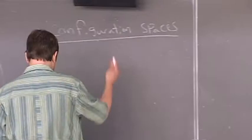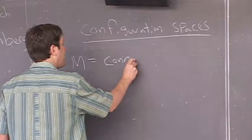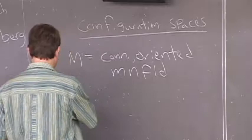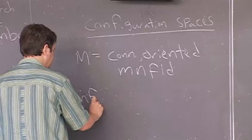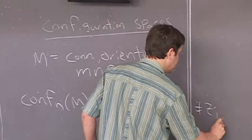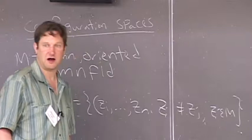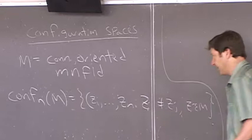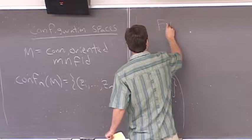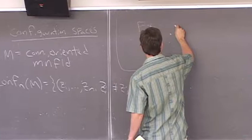We wrote a paper, and then Jordan Ellenberg came along for a second generation of this stuff. Let me take M to be a connected, oriented manifold — either closed manifolds or the interior of a compact manifold with boundary. I'd like to define the configuration space of n points on M as the space of ordered n-tuples of distinct points on your manifold. This is a basic and classical object studied in geometric and algebraic topology, and also in algebraic geometry and these days in robotics.